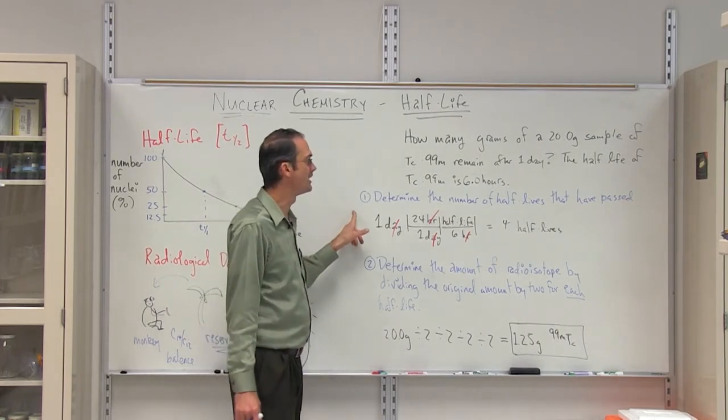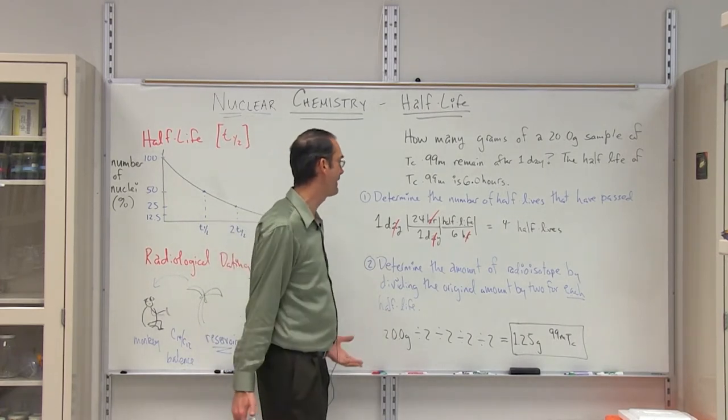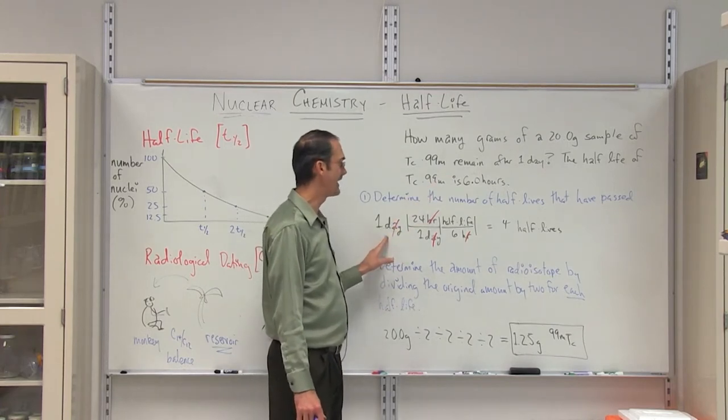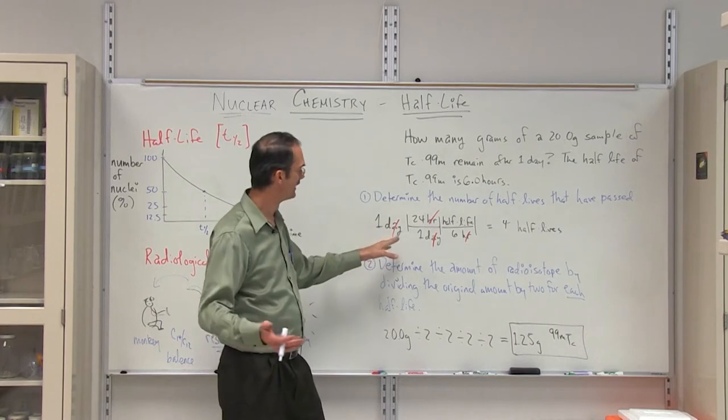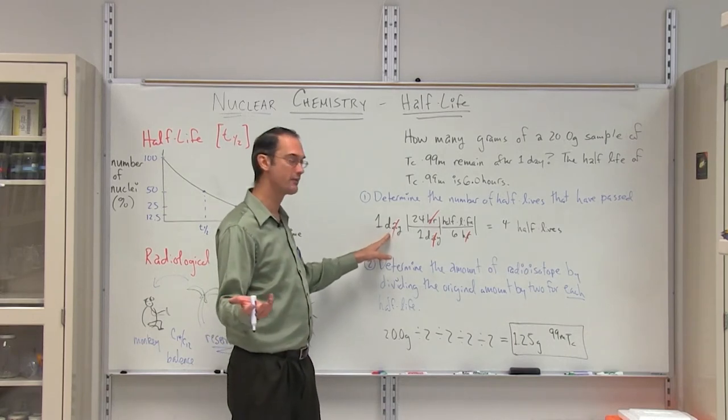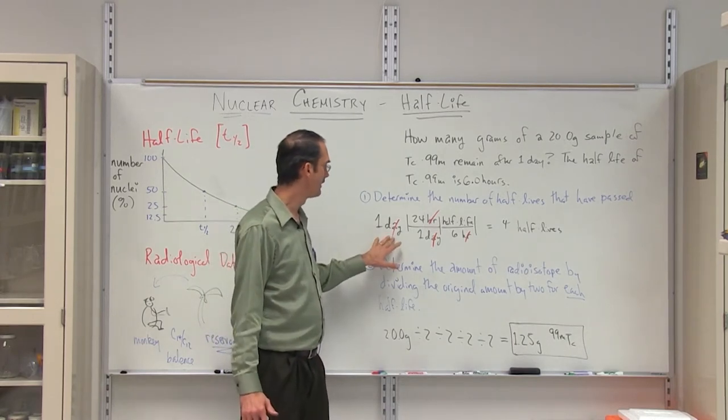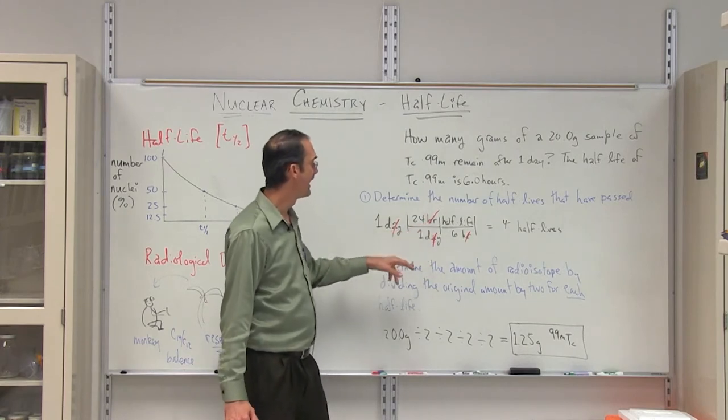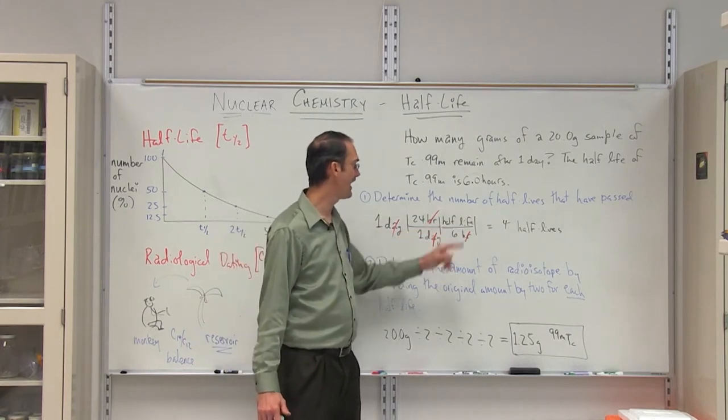So the first step is to determine the number of half-lives that have passed. I start by writing down my piece of given information, which is one day, and I want to come up with a number of half-lives. So if I have one day and I convert the day to hours, 24 hours over a day, and then I convert the hours to number of half-lives,